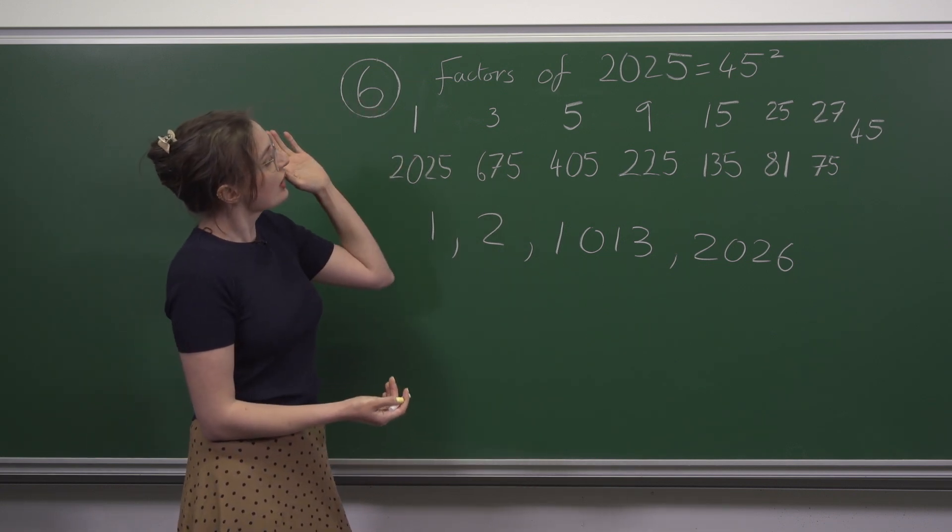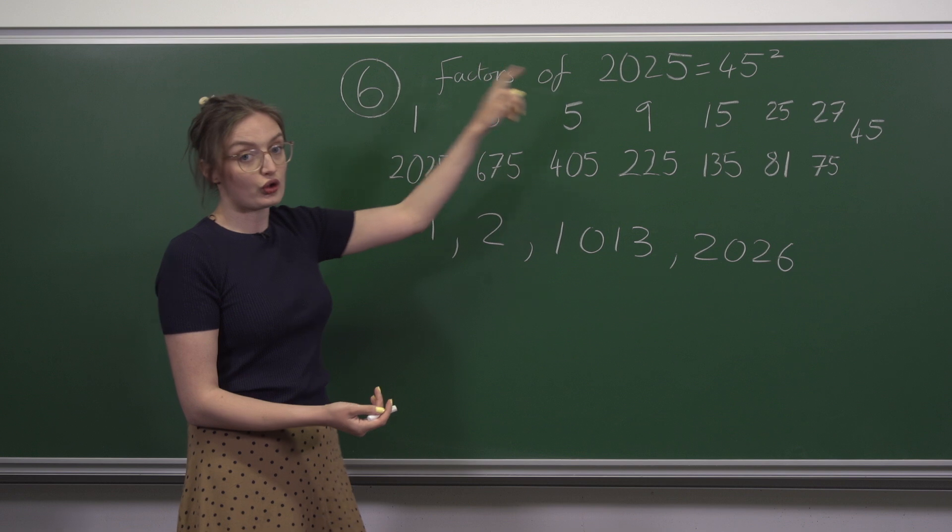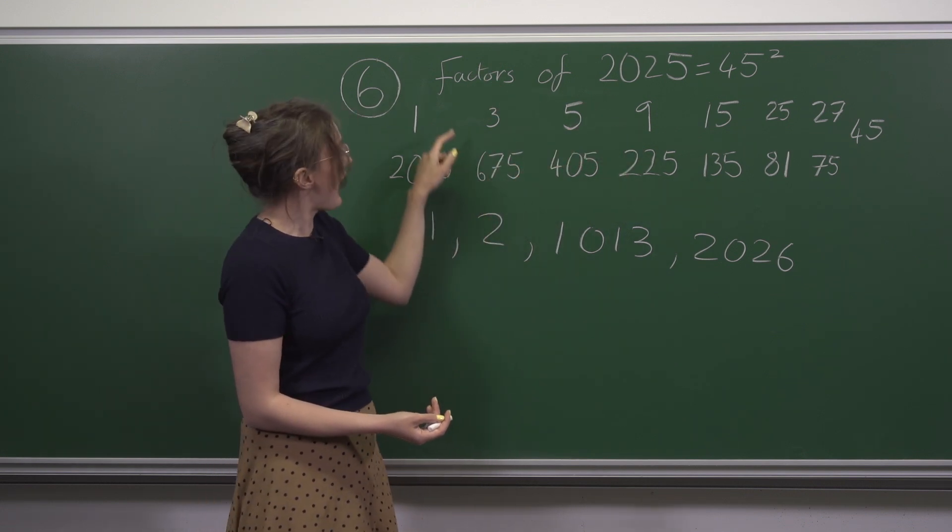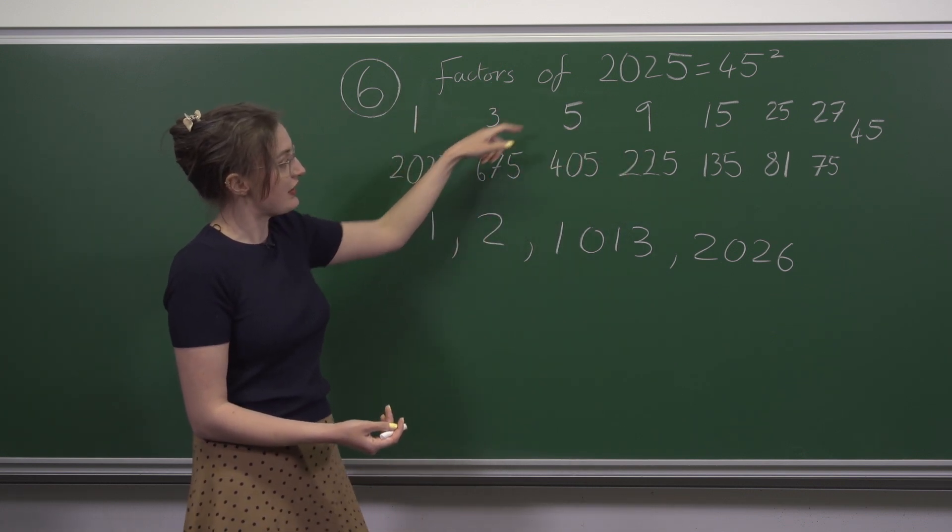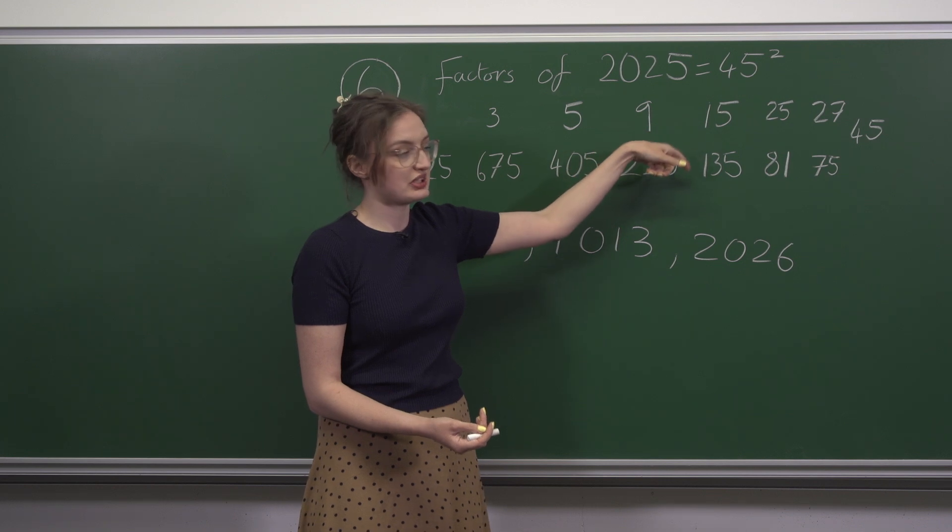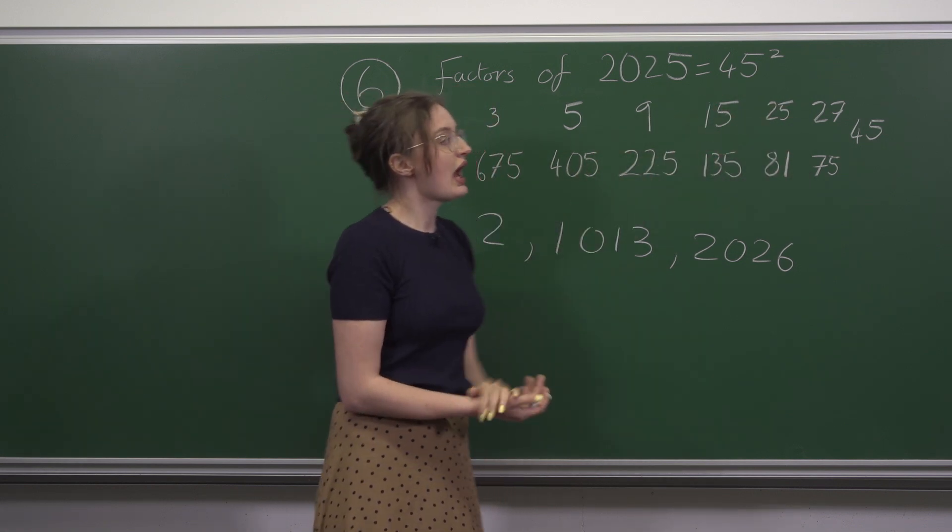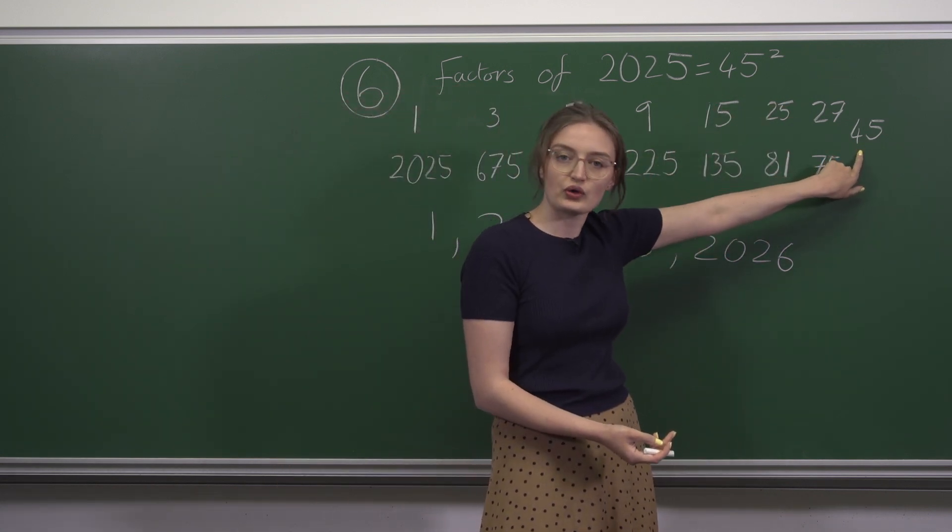So the example we started with has an odd number of odd factors. I've written the factors in their pairs which multiply to 2025 and there's one left over at the end, 45.